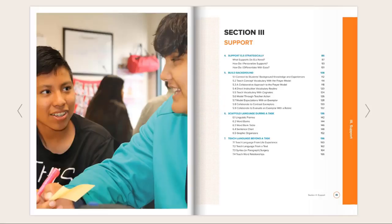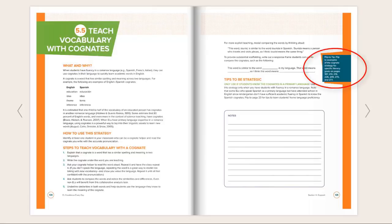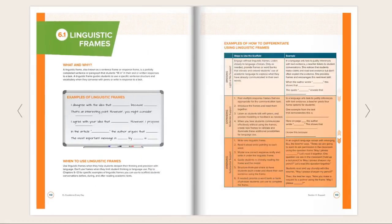Each support strategy includes what, why, and how in an easy-to-reference format. Flip-to tips on the margins refer readers to additional specific examples of the strategy in the final section of the book, applied to specific literacy goals.